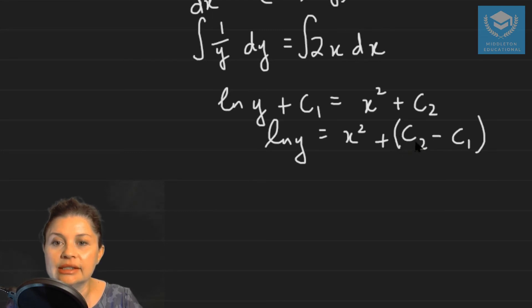And you see here the c2 minus c1. That is just a constant in itself. So I can say that ln y is equal to x squared plus the constant c. So that means that you don't have to add c1 and c2 on both sides of the equation. You only need to do it on one side of the equation. It's the same thing.